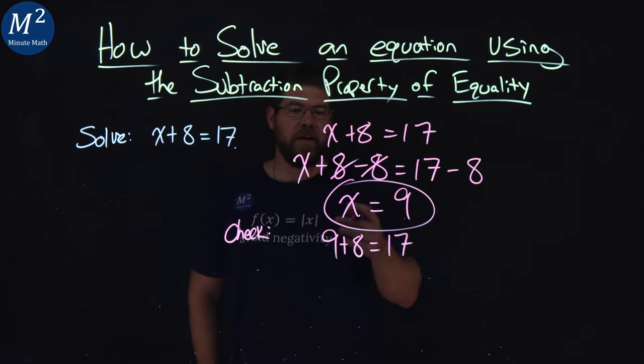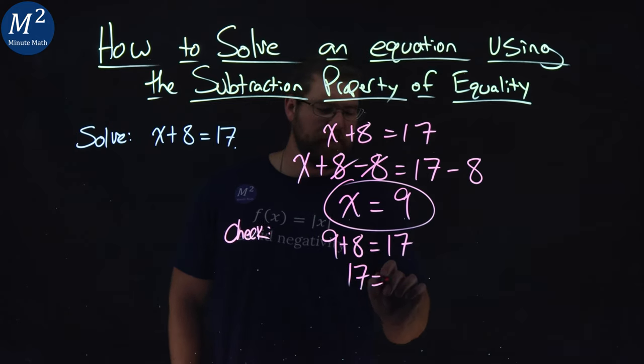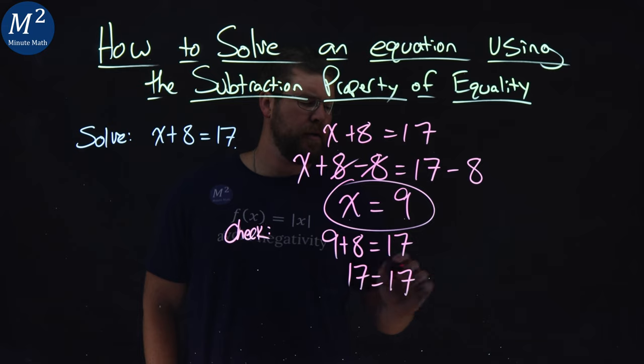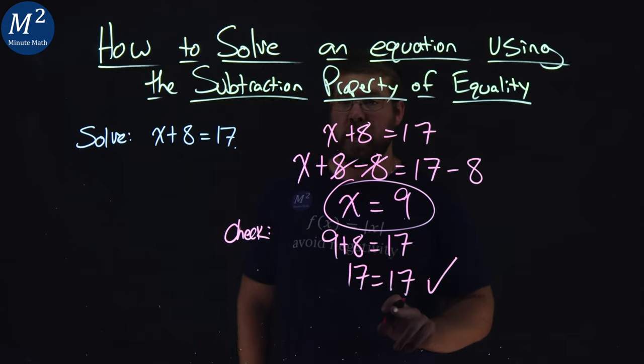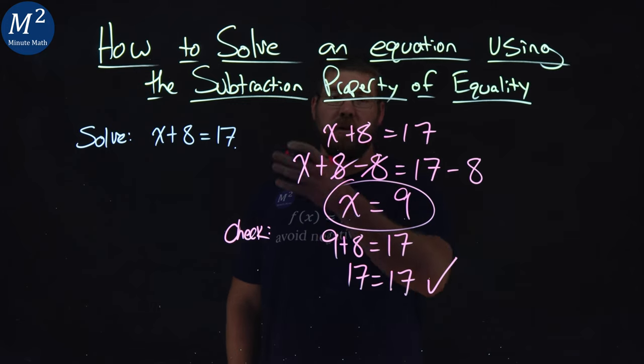Now I want to see if the left and right-hand side are equal. 9 plus 8 is 17. I know it seems almost redundant here, but yes, it checked out, meaning x equals 9 is a solution to our equation.